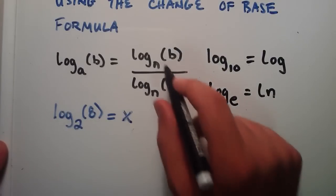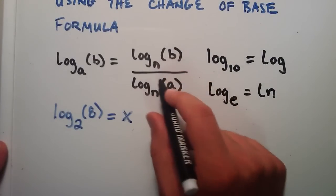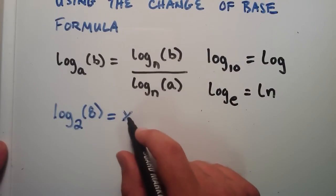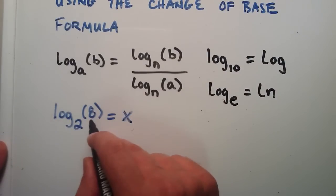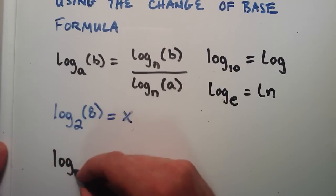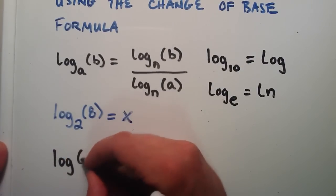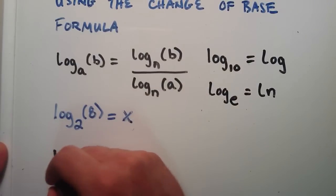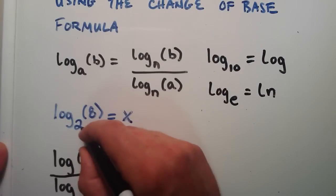So we can use our calculator and the change of base formula to find out what this answer is. So log base 2 of 8 using the change of base formula is simply log base 10 of 8 divided by log base 10 of 2.